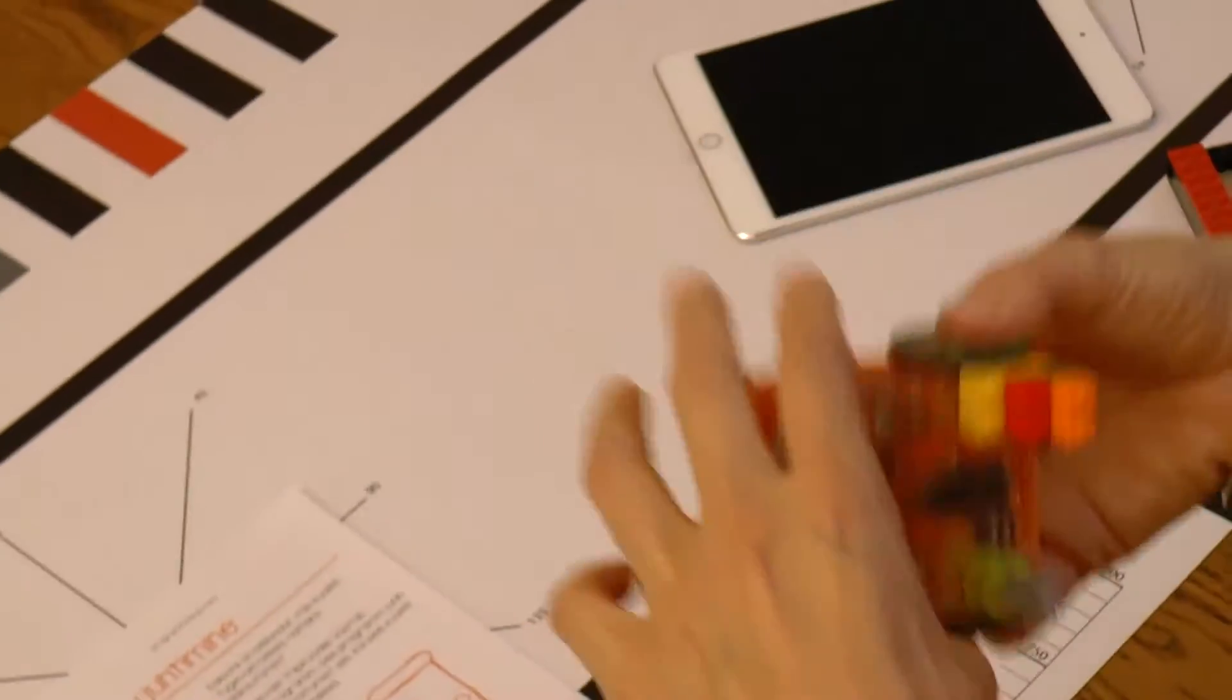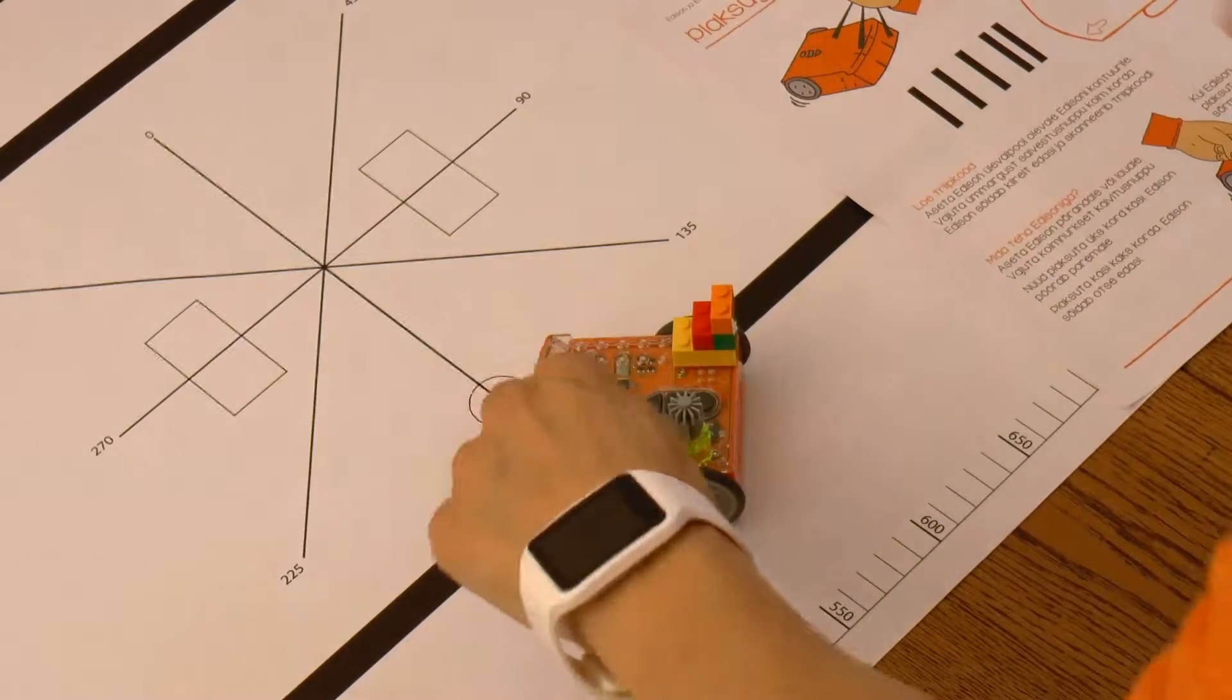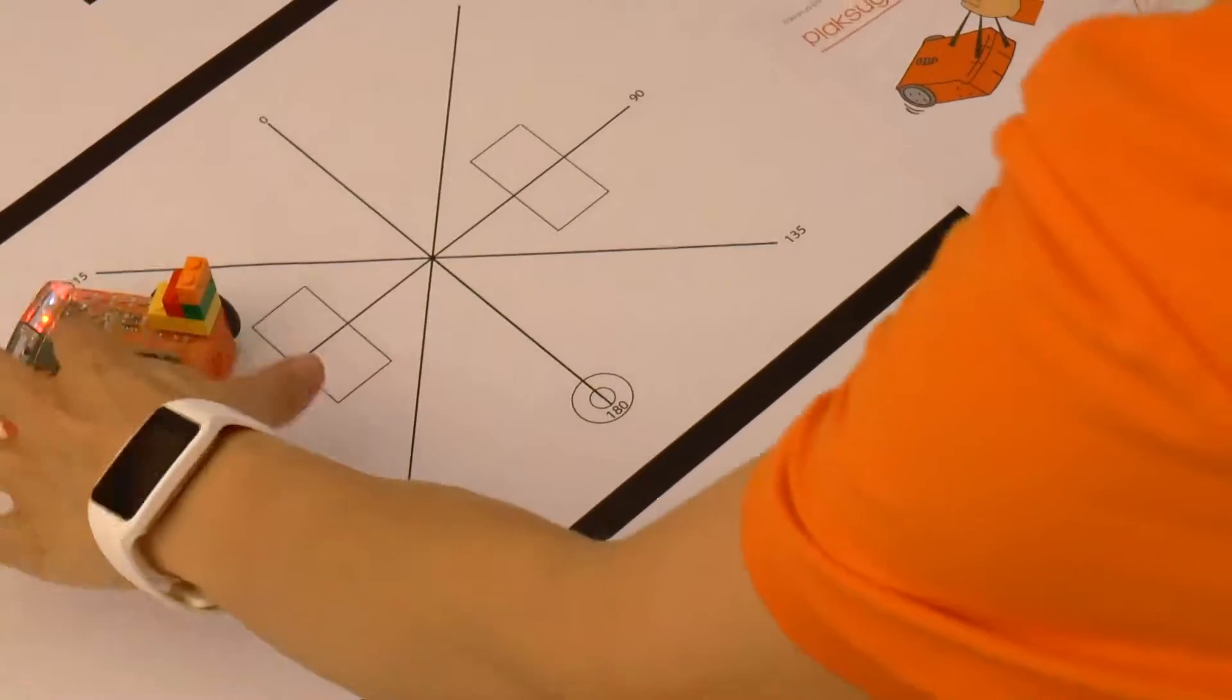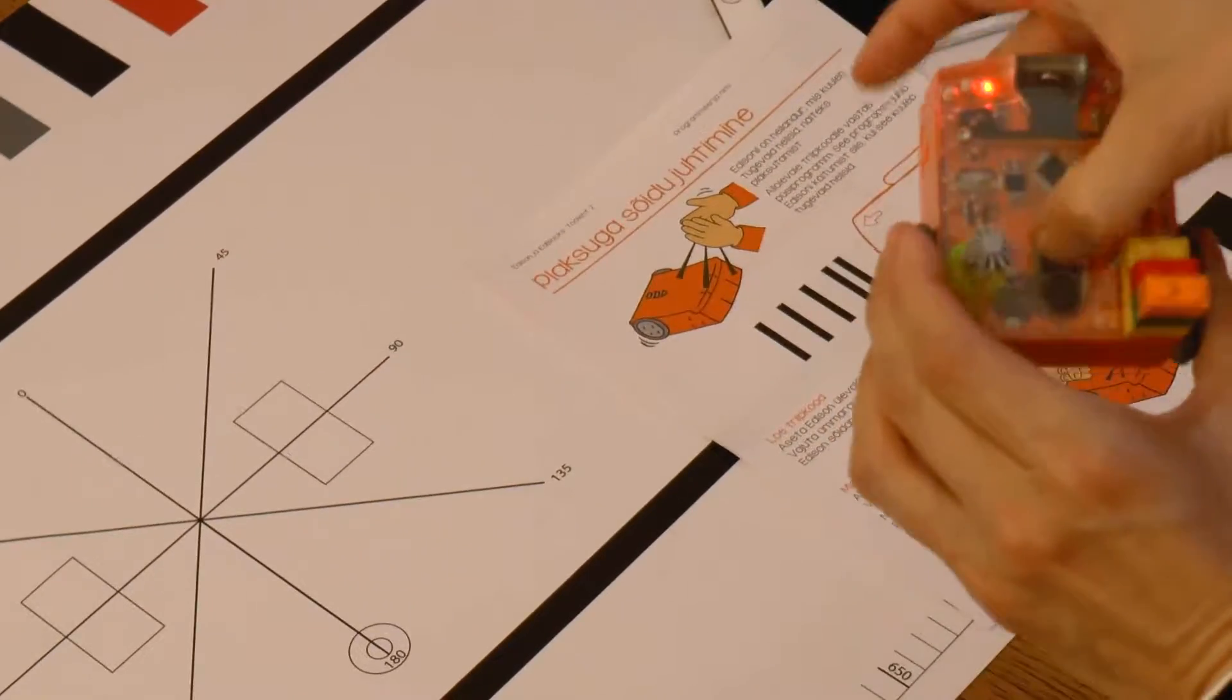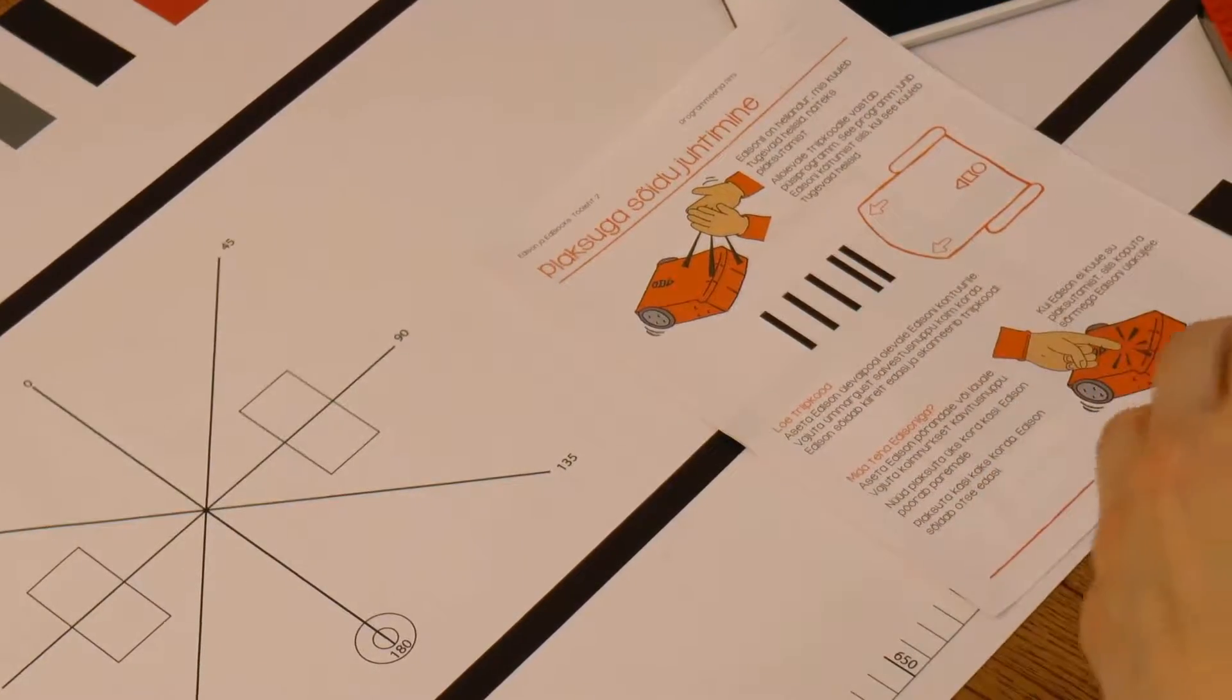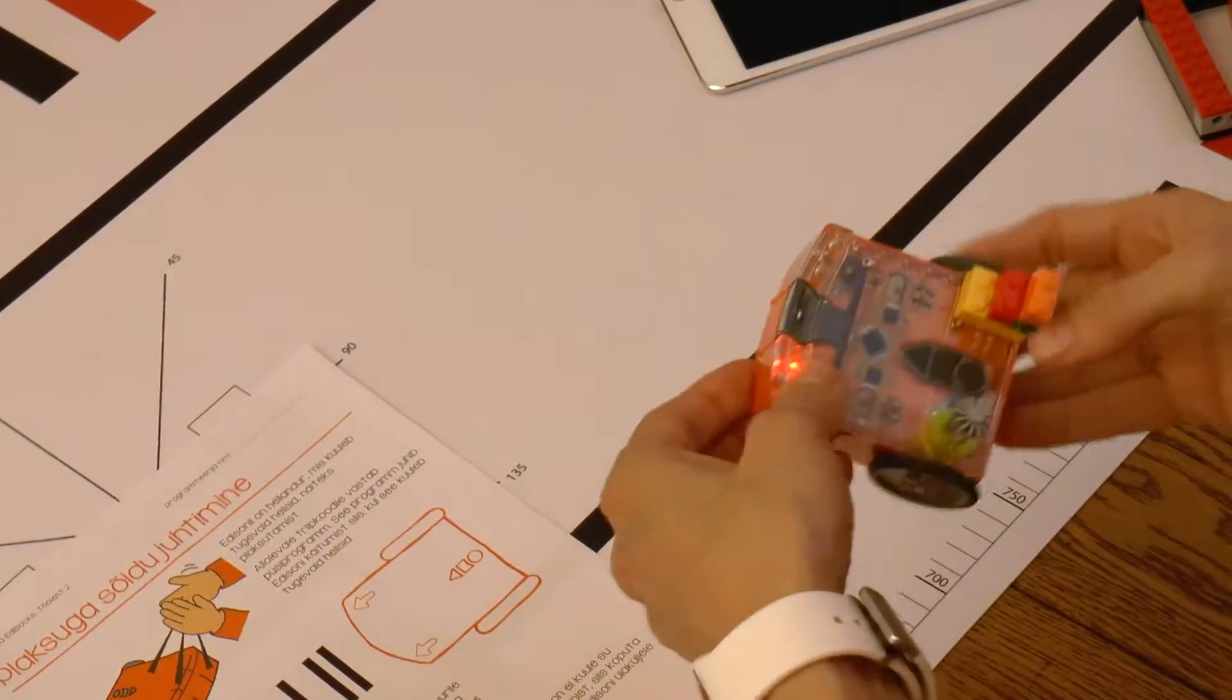Before running the preset program, you should know what the program does and if the program utilizes sensors, we need to know what kind of input Edison is expecting. For example, the current program listens for a clap or a double clap, to which it responds by activating its motors.